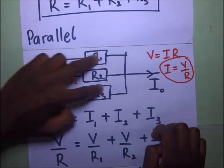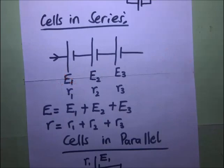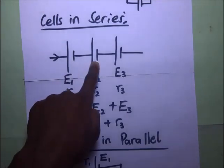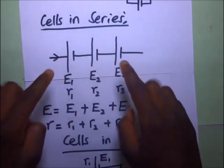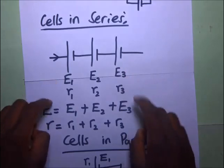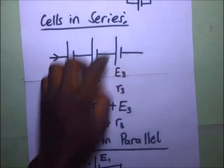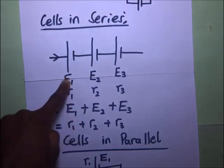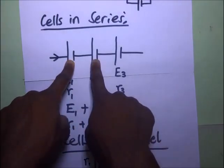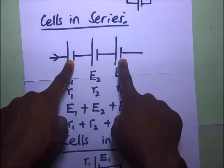This is a cell, that is a cell, collectively they make a battery. So if you want to find the effective EMF or the total EMF of this battery, it means we are supposed to add the EMF of that cell and the EMF of that cell and the EMF of that cell. That is how we get the effective EMF.